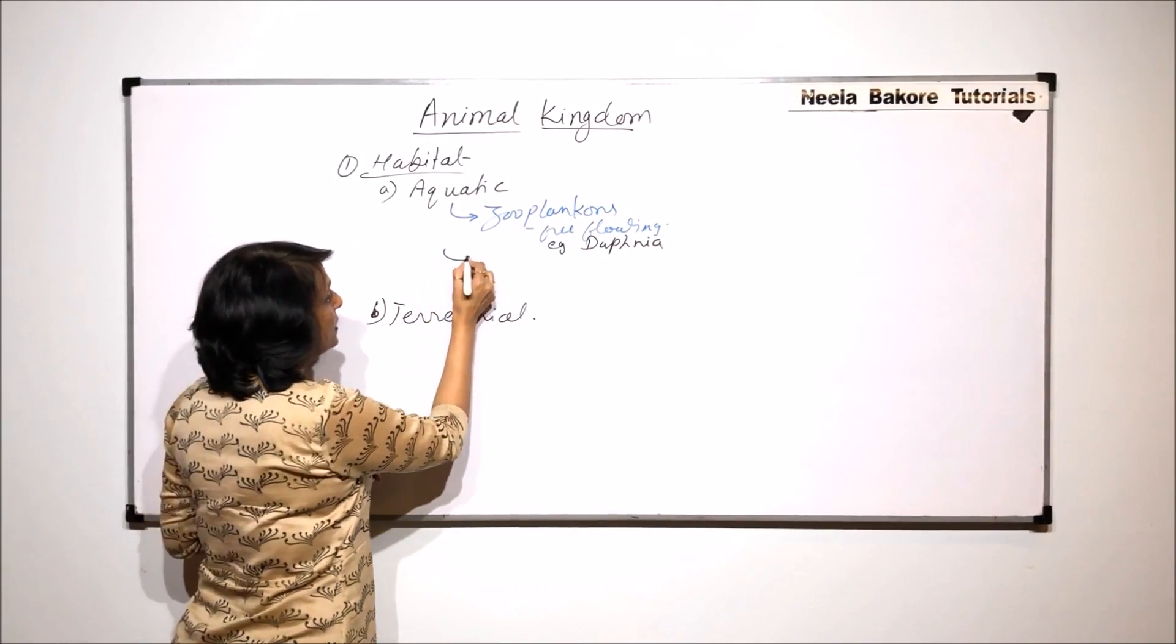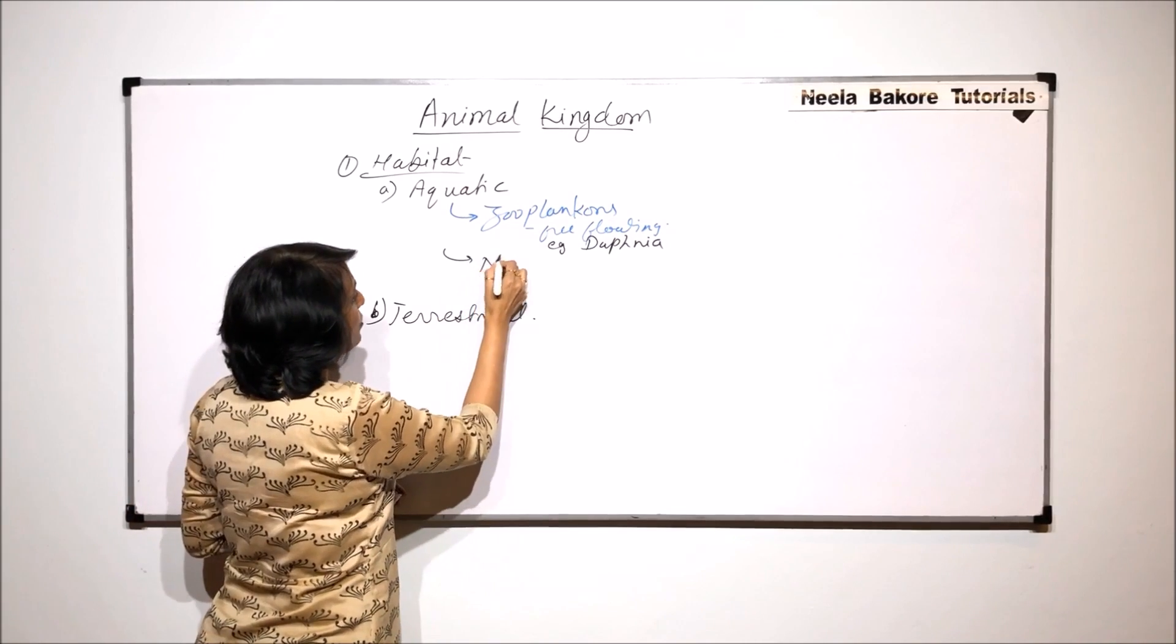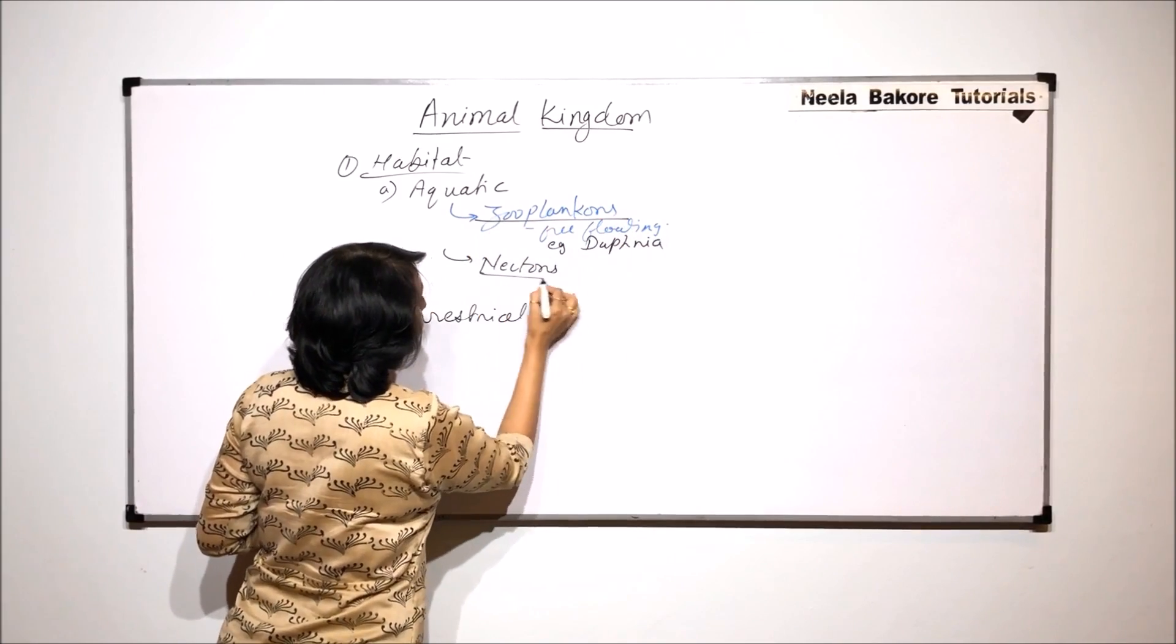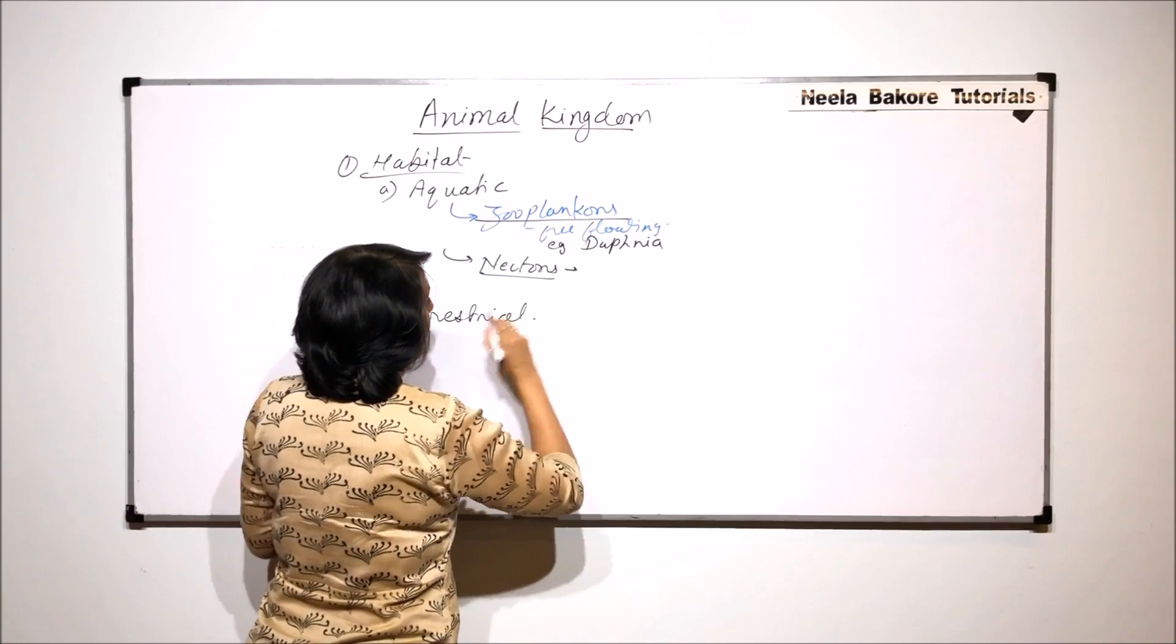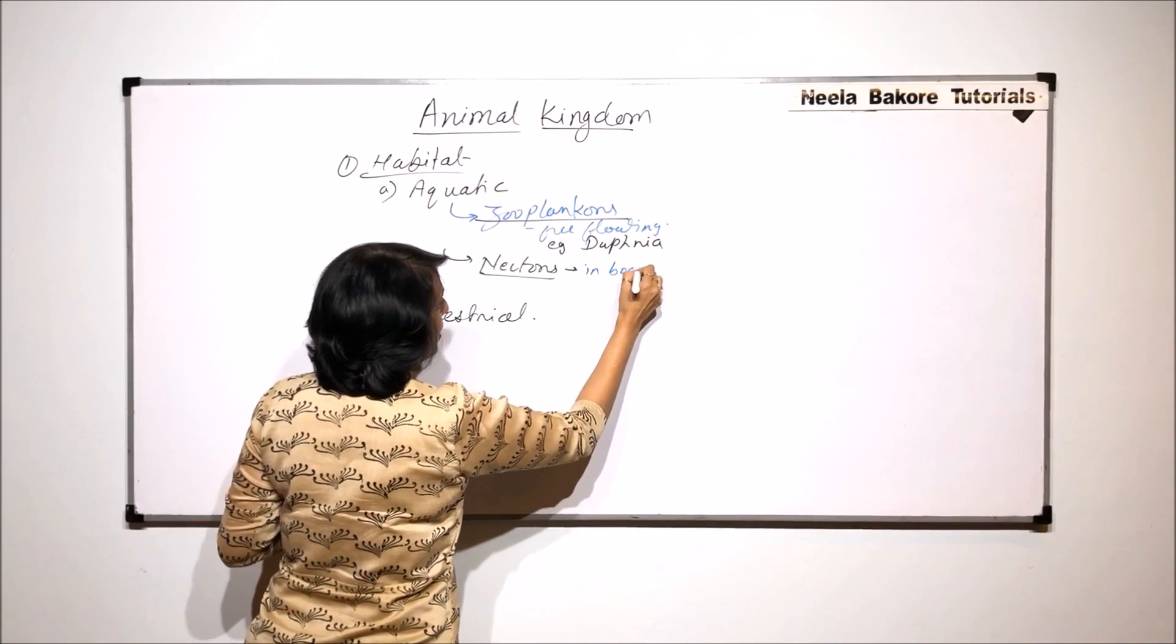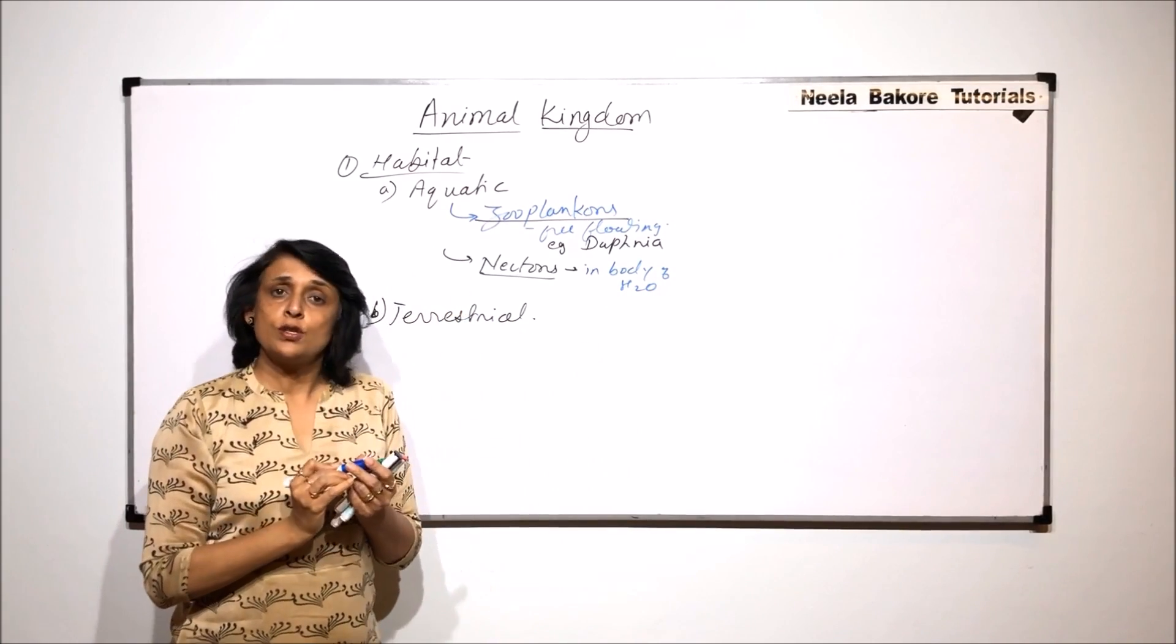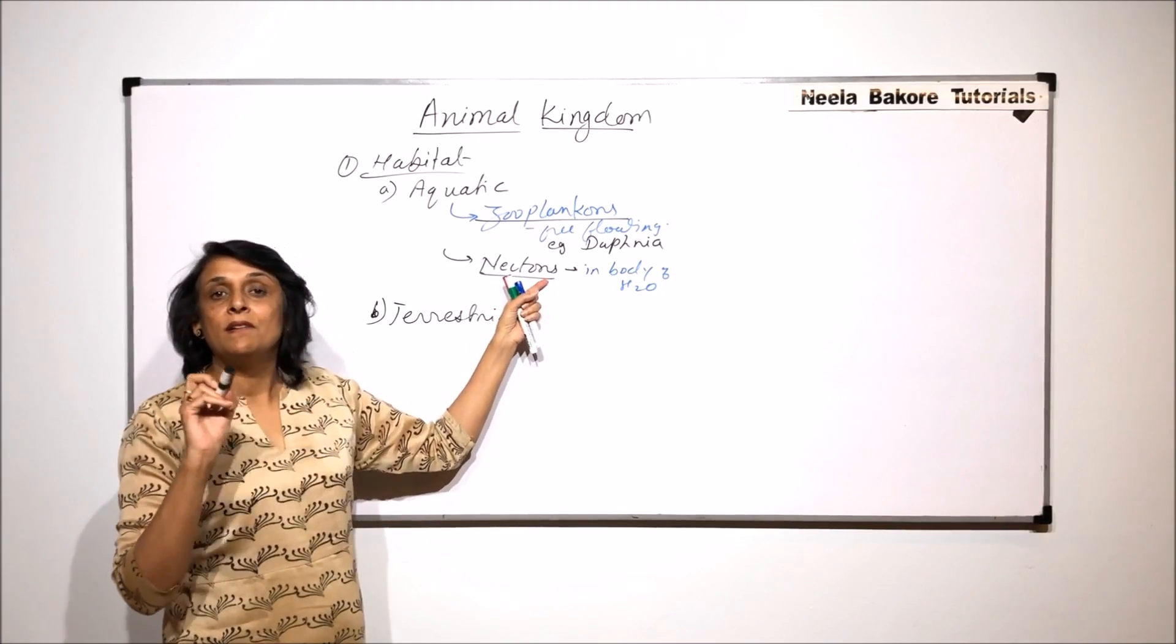Now there are animals which are found in the middle part of the water body, and they are known as nectons. Nectons are in the body of water, somewhere in the middle part. Most of the fishes which we find are in this middle region.